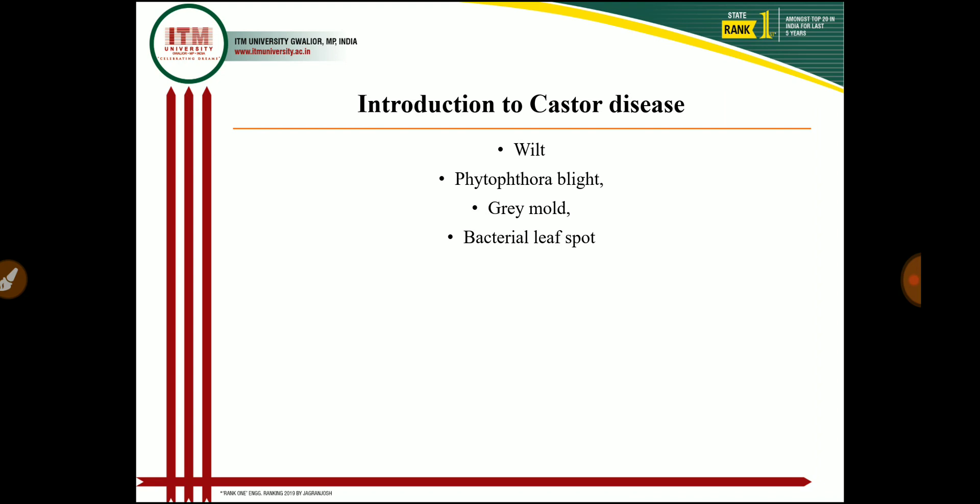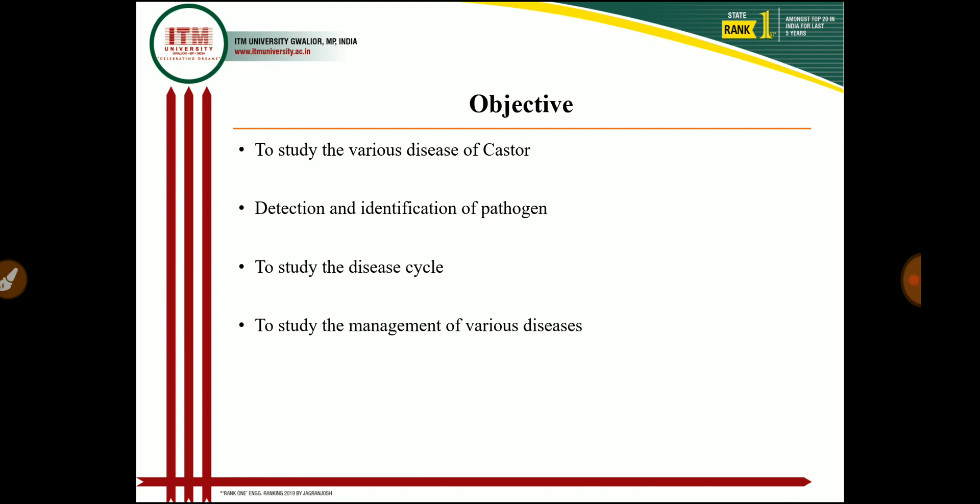Because castor is grown as a perennial crop, it is more prone to attack by a number of diseases. In today's lecture I will cover only four diseases: castor wilt, phytophthora blight, gray mold, and bacterial leaf spot. These diseases mainly occur due to fungal and bacterial pathogens; some nematode and viral diseases also occur in castor crop.